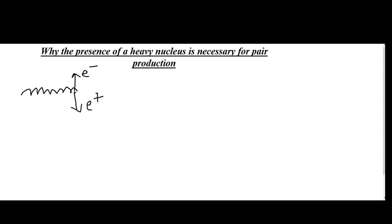Positron is the anti-particle of electron with exactly the same mass but opposite charge. As electron and positron are oppositely charged, so in this process there is no violation of the law of conservation of charge. And as a fast moving energetic photon is converted into electron and positron, so there is no violation of conservation of energy also in this process.